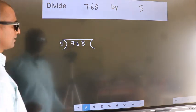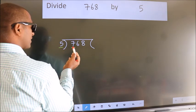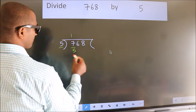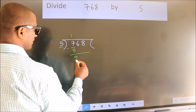Next, here we have 7 and 5. A number close to 7 in the 5 table is 5 once 5. Now we should subtract. We get 2.